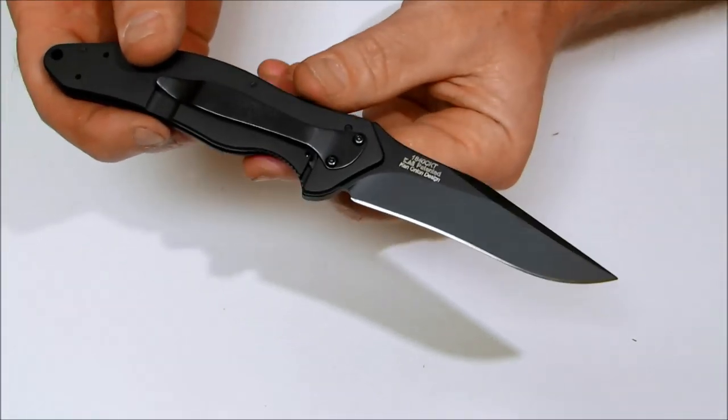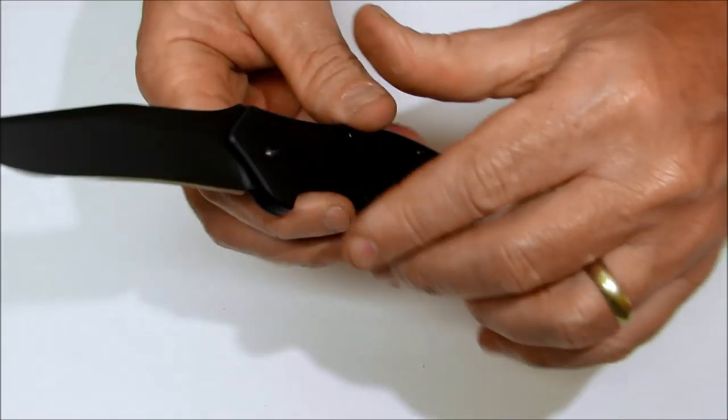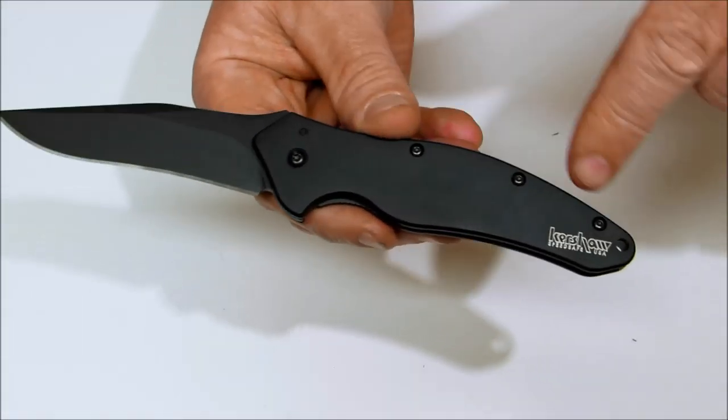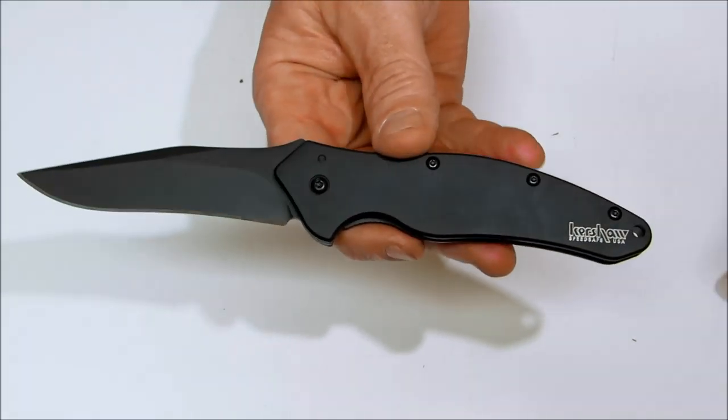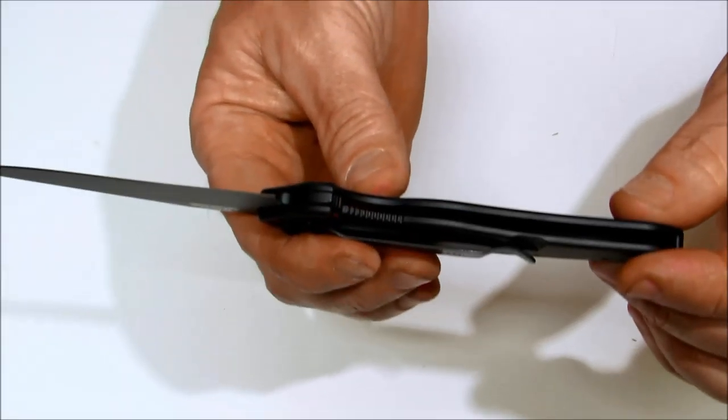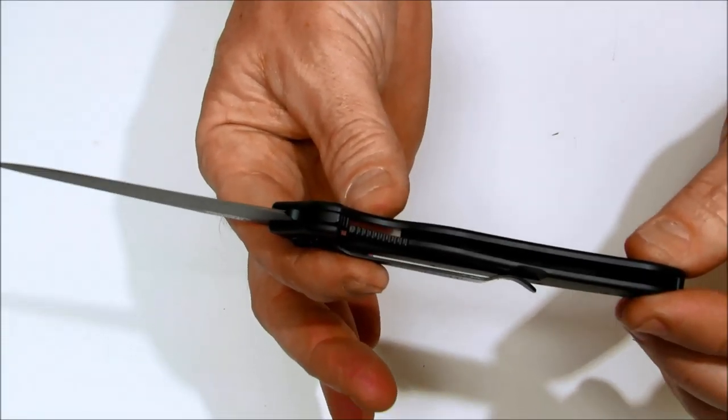Blade length again is three and a half inches. You have a closed length of four and three eighths. Overall it measures in at seven and seven eighths inches. The weight is 4.2 ounces.